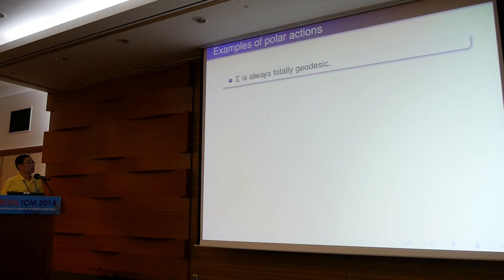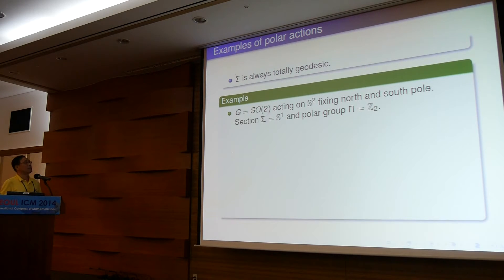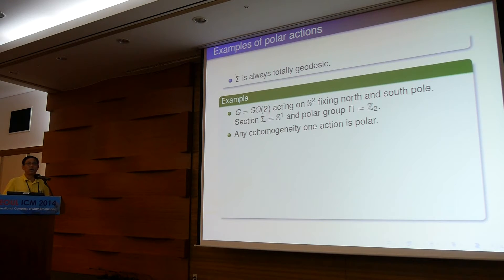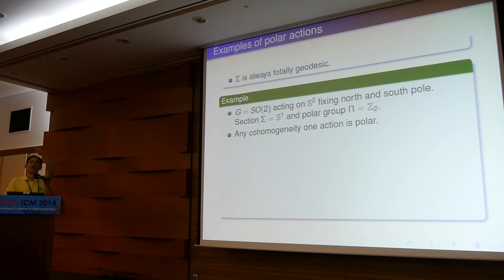Notice that Σ is always totally geodesic — that follows from the definition. For a basic example, consider the rotation group acting on the round sphere S², fixing two pole points. Then the section Σ is just a great circle passing through the two poles, and the polar group is Z₂. A bigger family: every cohomogeneity-one action is polar. Cohomogeneity one means the orbit space is one-dimensional, i.e., the principal orbits have codimension one. Because you have a normal geodesic perpendicular to the principal orbit, you can always extend it, so this action is always polar.